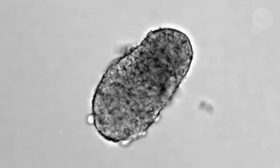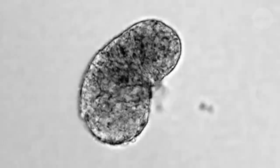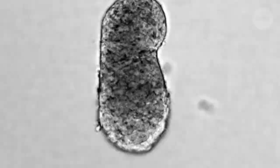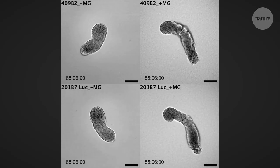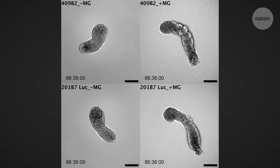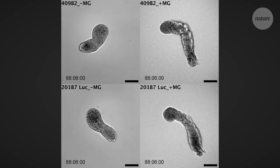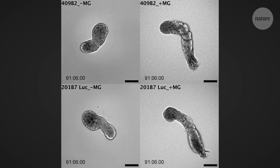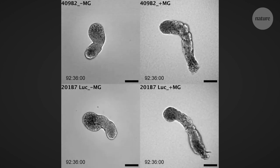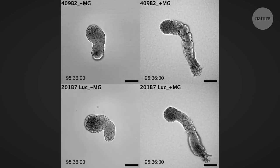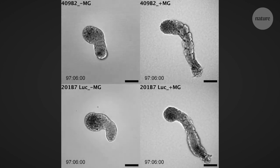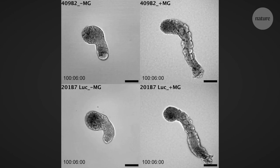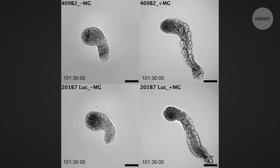the researchers exposed stem cells to chemical signals which trigger them to differentiate into various embryonic structures. One by one, they introduced different signals before embedding the cells into a scaffold called a matrigel,